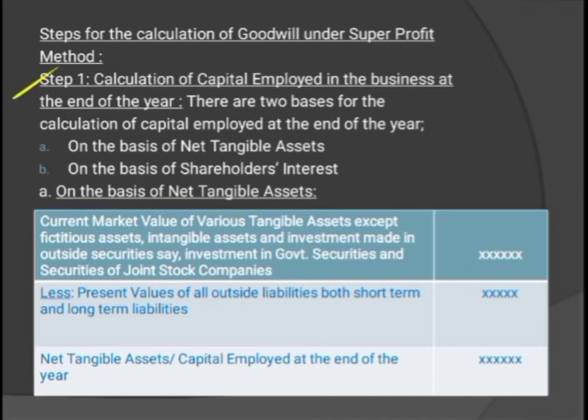Step 1 is the calculation of capital employed in the business at the end of the year. There are two bases to calculate this: either on the basis of net tangible assets, or on the basis of shareholders' interest. The answer will be the same either way. If information about all assets and liabilities is given in the question, follow the first method — net tangible assets.